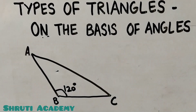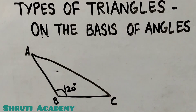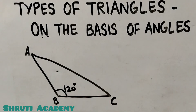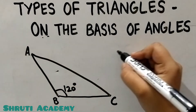Now I have drawn a triangle A, B, C. This angle is 120 degrees. We revised that an angle greater than 90 degrees is an obtuse angle, so this is an obtuse angle.